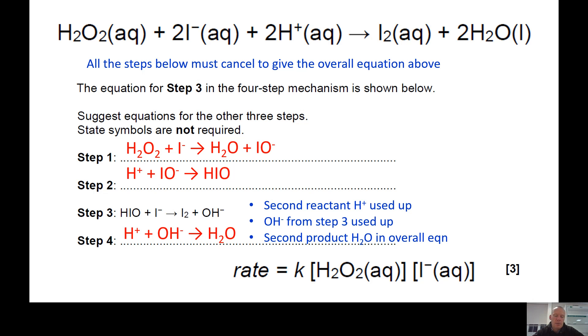In my final step you'll notice that in step three there is an OH- that was made. That has to be used up because OH- is not in the overall equation at the top. That also allows you to make my second H2O that's in the product side of the overall equation at the top.